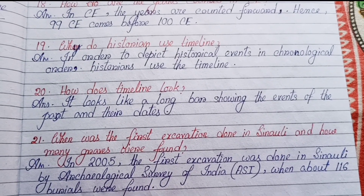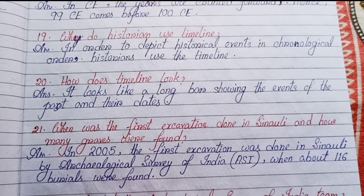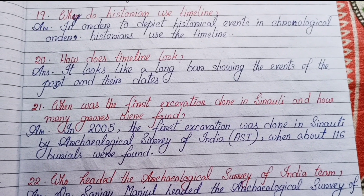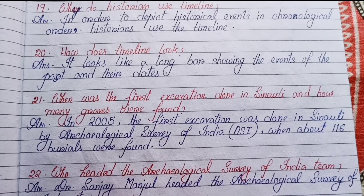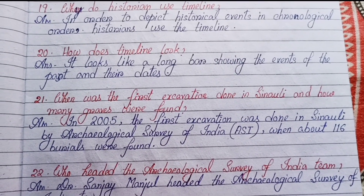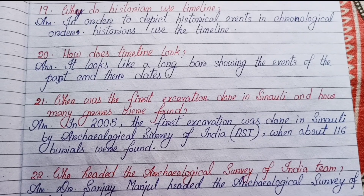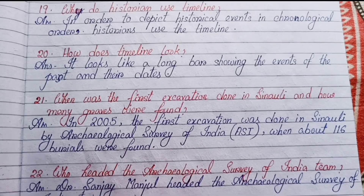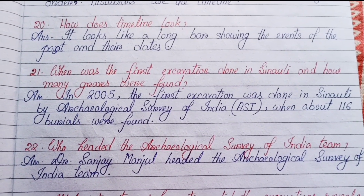Number nineteen: Why do historians use a timeline? In order to depict historical events in chronological order, historians use the timeline. Number twenty: How does a timeline look? It looks like a long bar showing the events of the past and their dates.